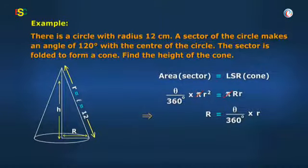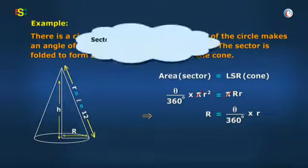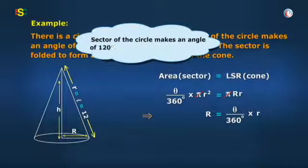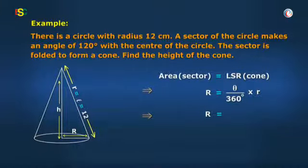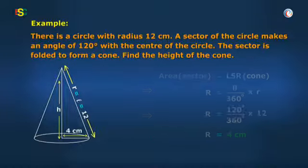Further in the question, it is given that a sector of the circle makes an angle of 120 degrees with the center of the circle. So R = 120/360 × 12, which equals 4 centimeters.